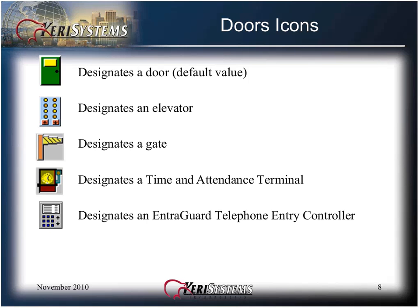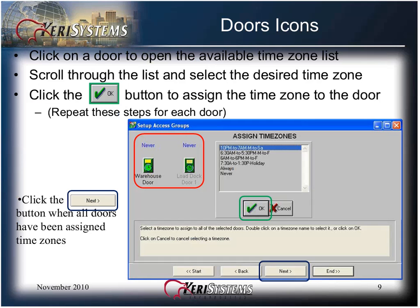The Entry Guard telephone entry icon appears automatically when a unit has been detected during auto configuration. Click on a door to open the available time zone list. Scroll through the list and select the desired time zone to be assigned to that door. Then click the OK button to assign the time zone to the door. You must repeat these steps for each door in your access group. Then click the Next button when all the doors have been assigned time zones.